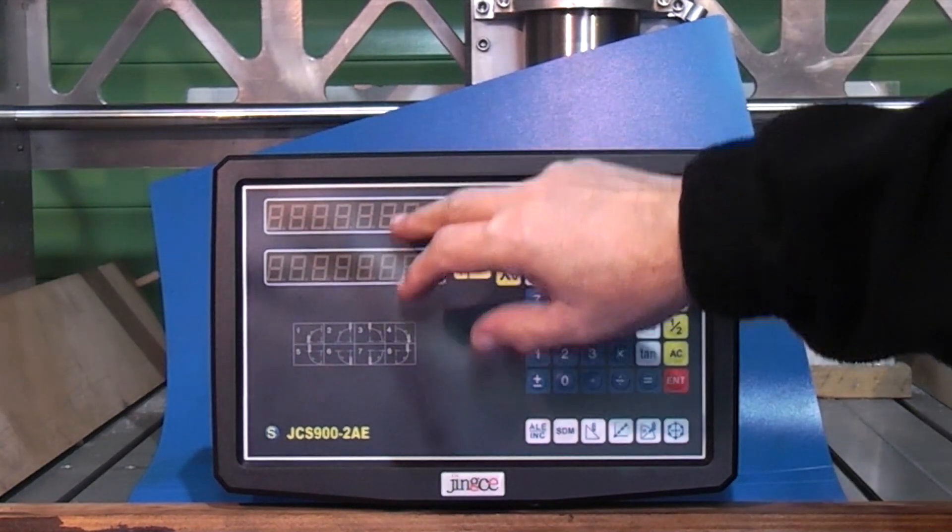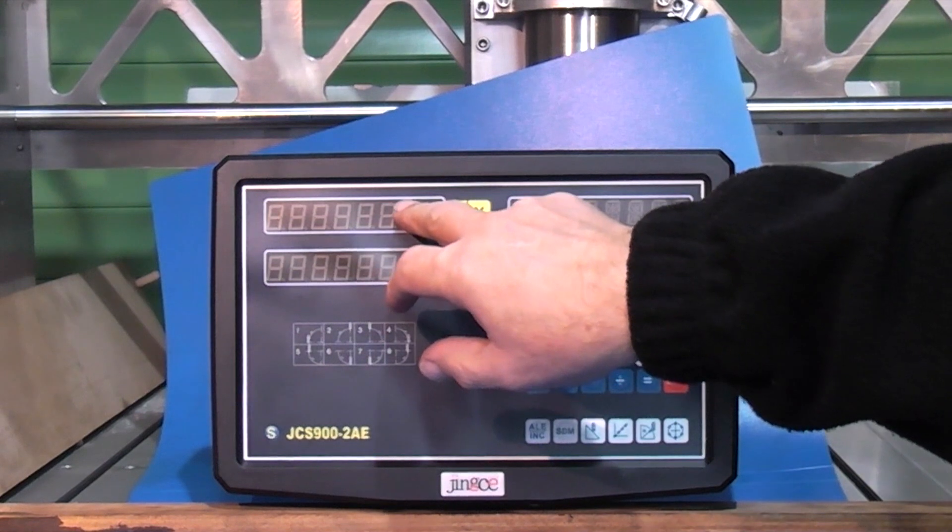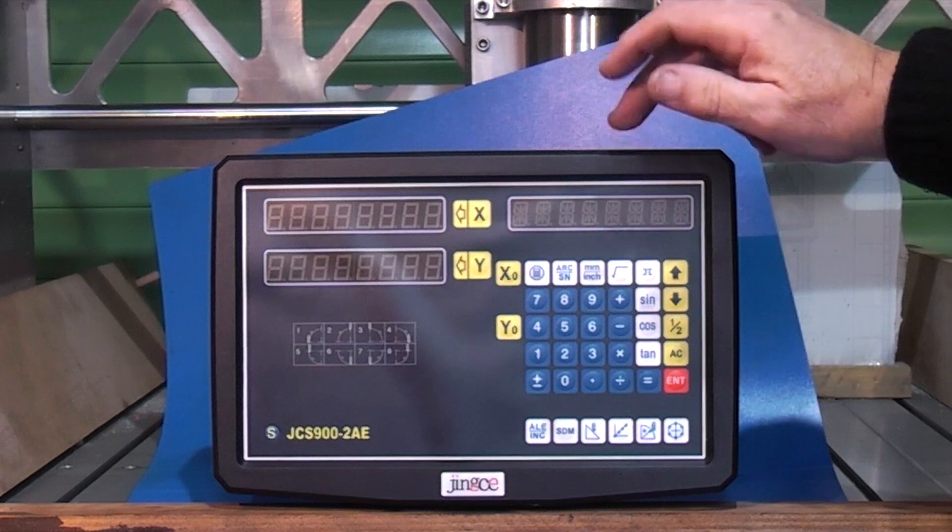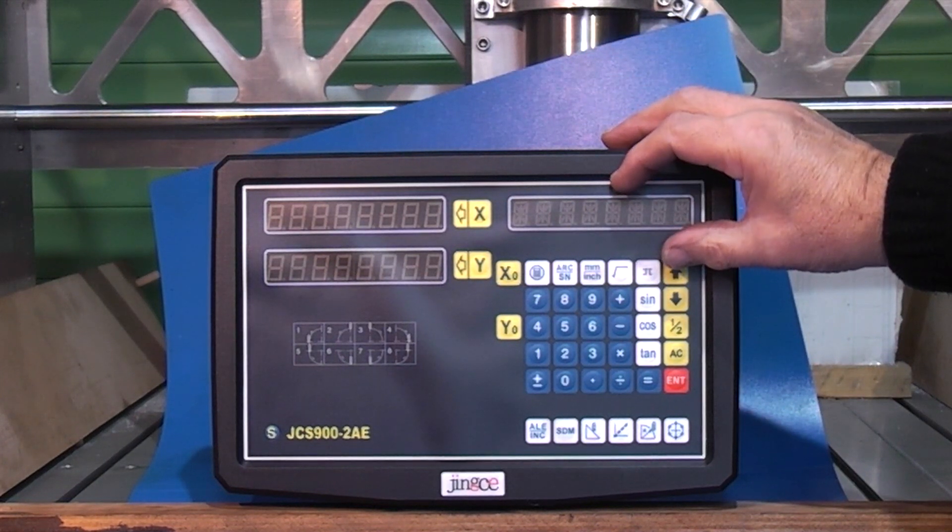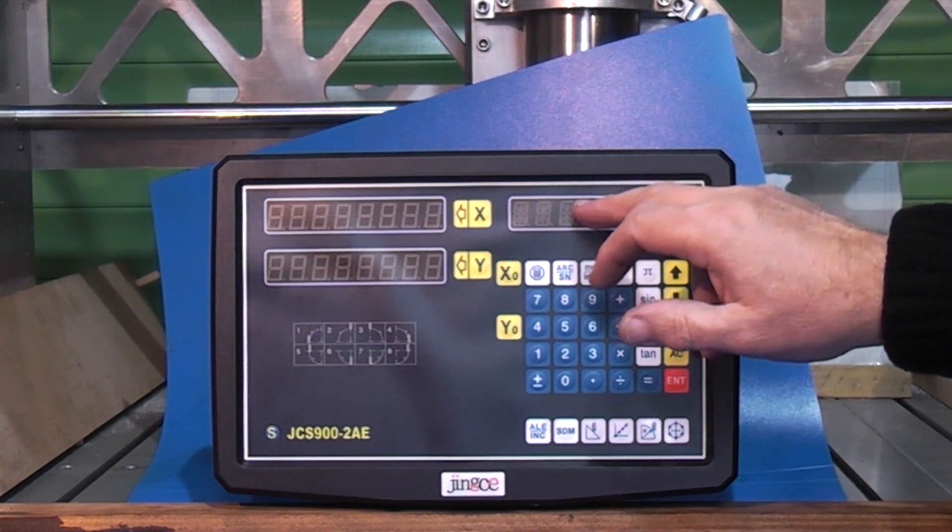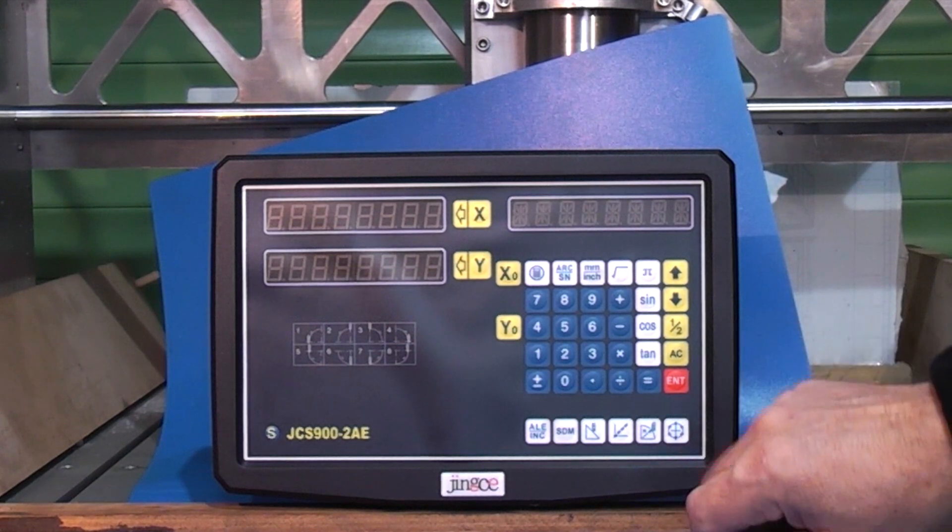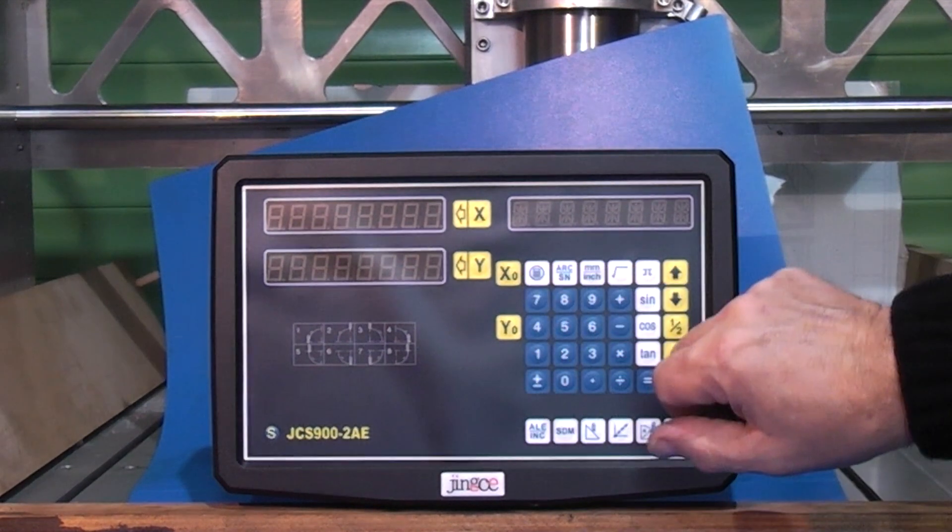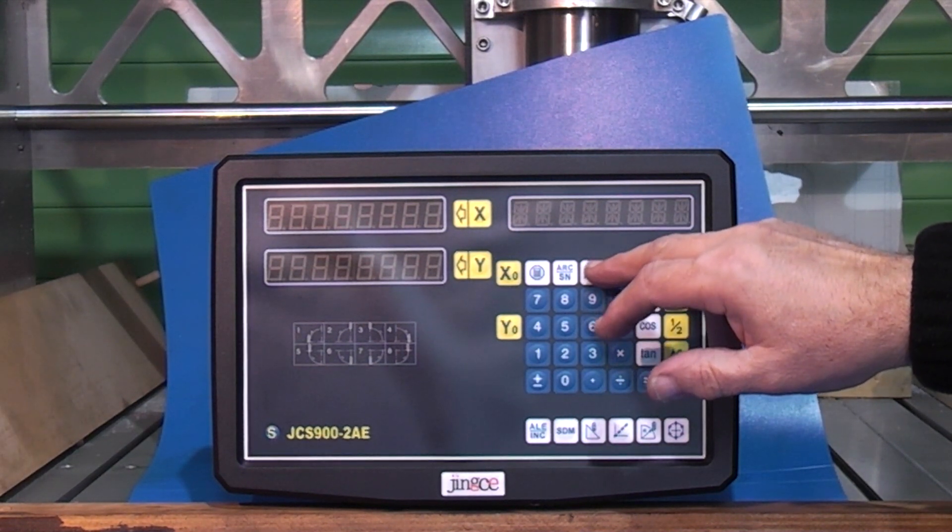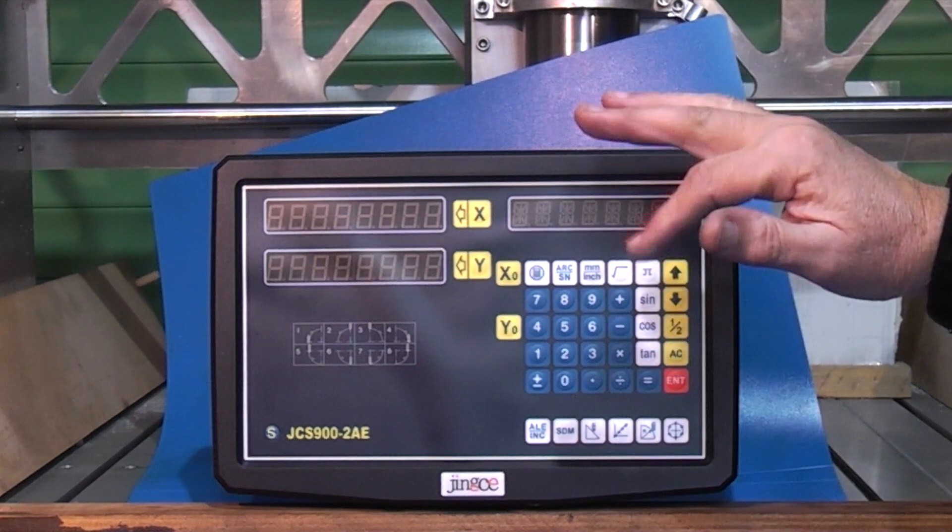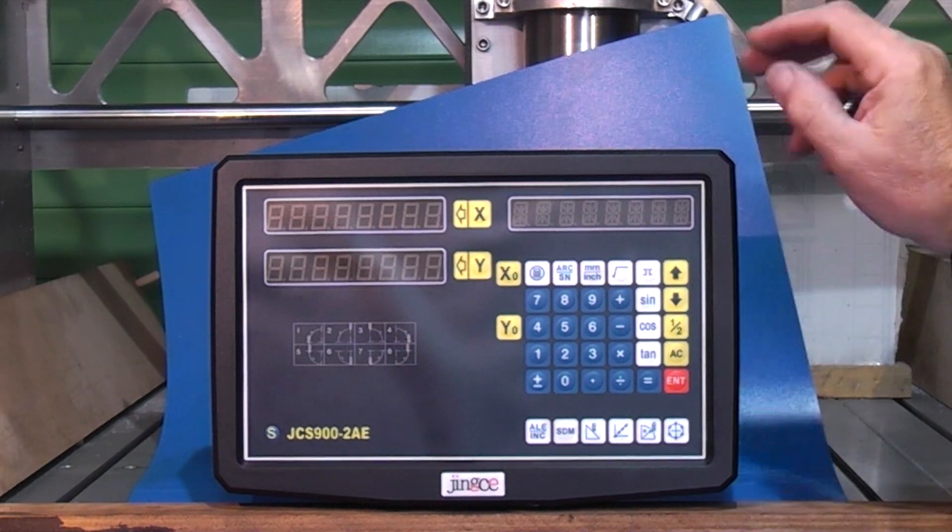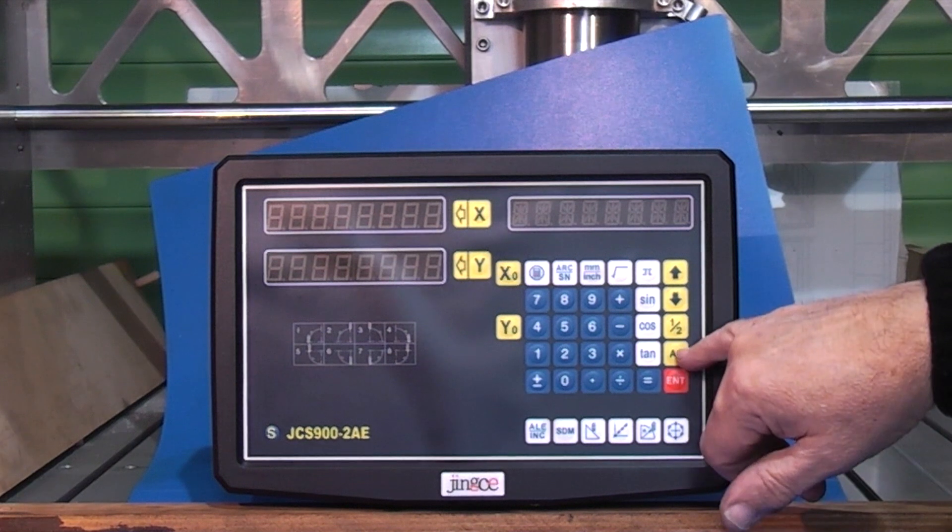So if I just run through what we have - we have X and Y readouts. We have a screen for information. It could also display what subdatum you're on or the answer to any calculations. You have a calculator which is a standard calculator. It has sine, cosine, tangents, square root. You can convert from metric to imperial just by touching this button at any time without losing the position of the X and Y axes. It'll just swap over instantly from metric to imperial.